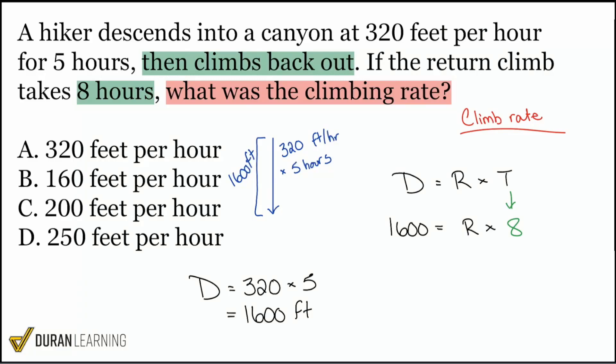And there we are. Now we can finish this problem with one final move. That final move is dividing both sides by eight. That's going to give us the rate by itself. Rate equals 1600 divided by eight, which is two. Tacking those zeros along at the end, that's going to be 200 feet per hour. That is our rate for the climb. And that is answer choice C.